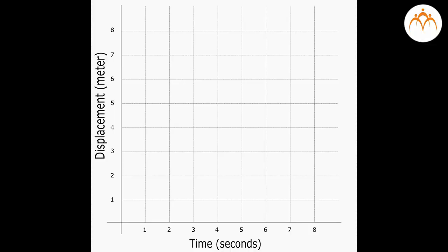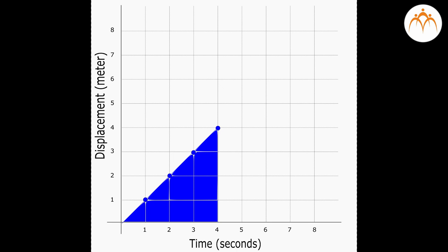Displacement-time graph: let's begin by graphing the motion of a car. We will plot time on the x-axis and displacement on the y-axis. In the first second it covers 1 meter; in 2 seconds, 2 meters; in 3 seconds, 3 meters; in 4 seconds, 4 meters. If we plot this motion, we get a straight-line graph. The slope of the line is the speed of the car — 1 meter per second. Since it is a straight line, velocity is constant. The area under the graph gives the total displacement covered in 4 seconds.